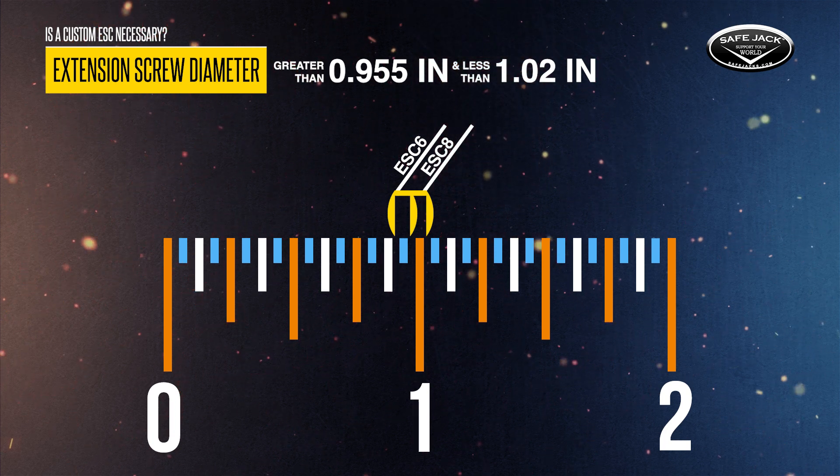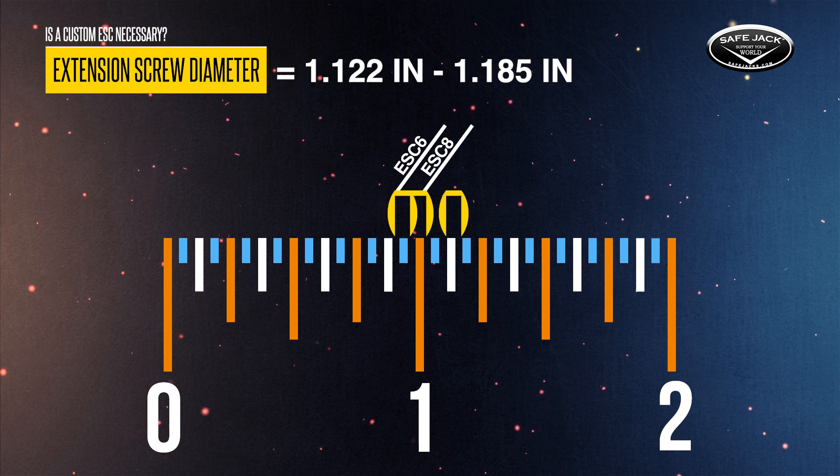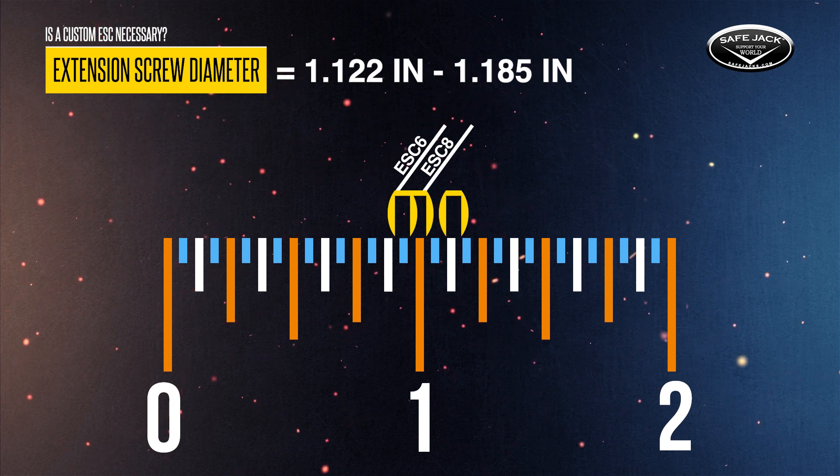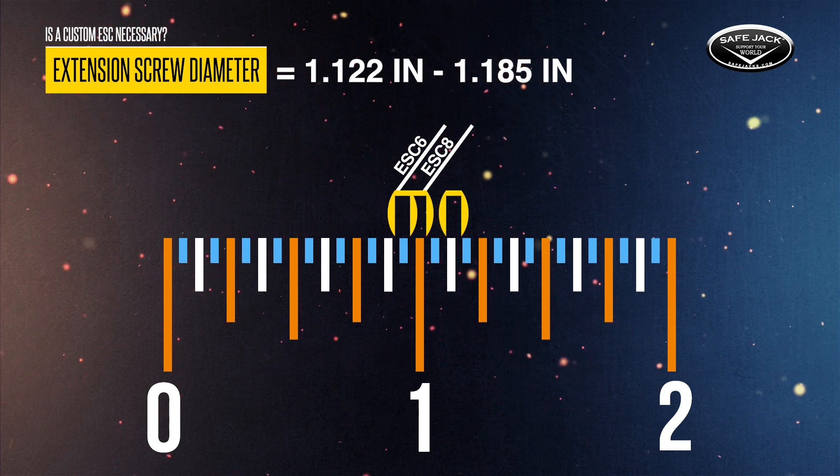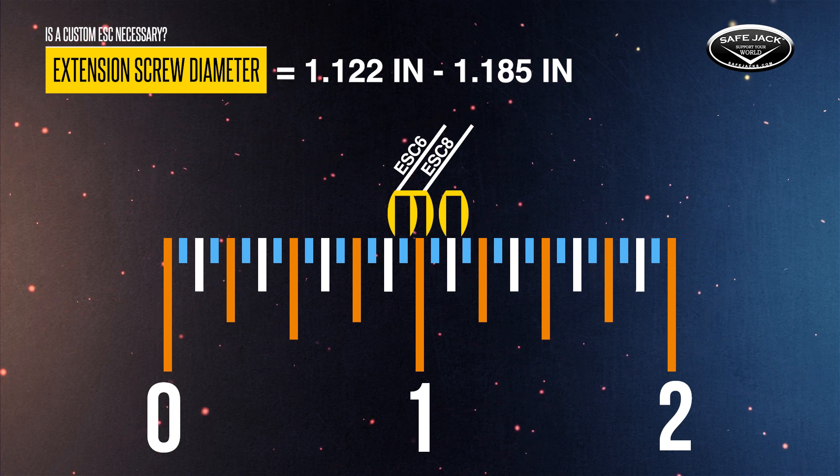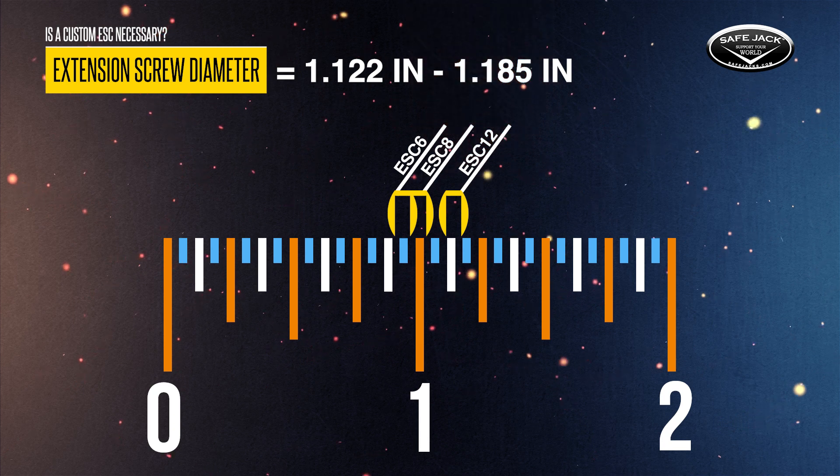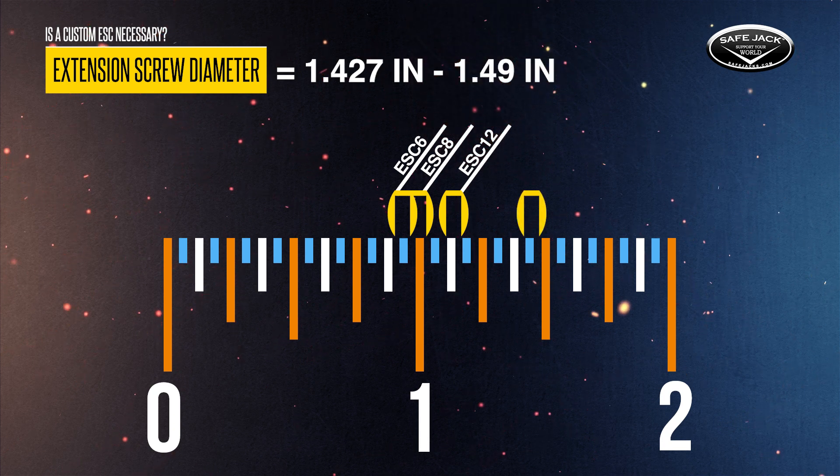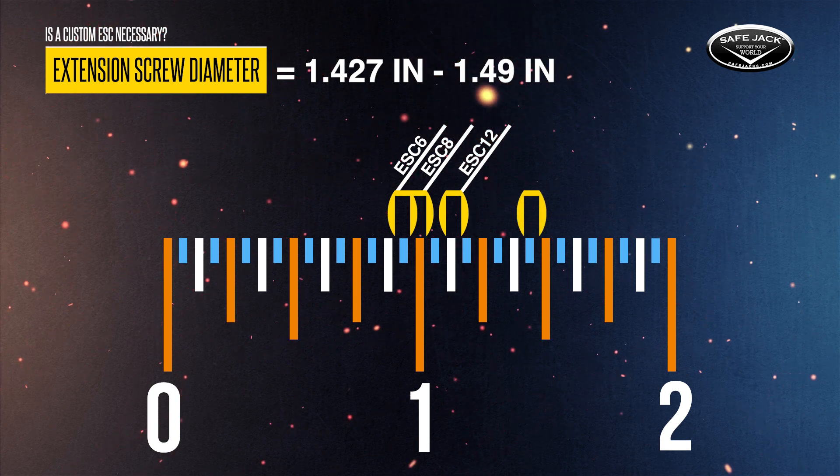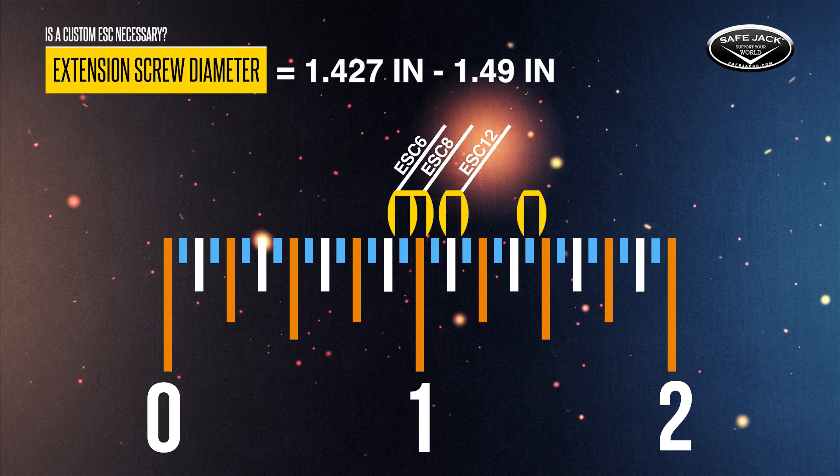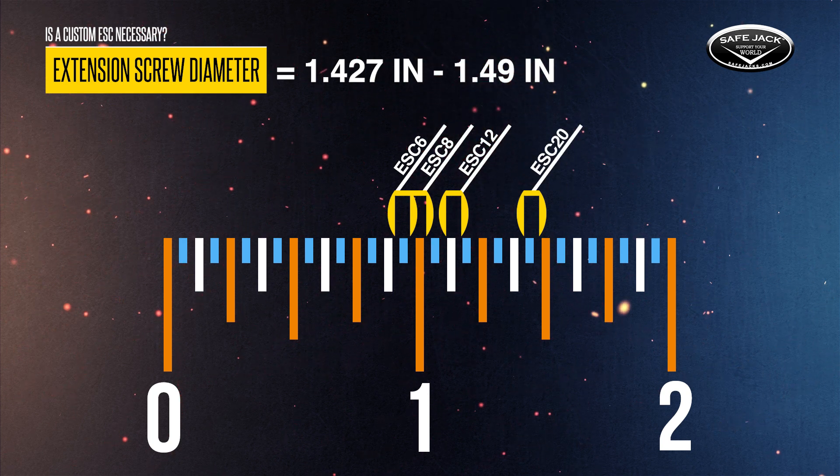If your extension screw measures between 1.122 inches and 1.185 inches, then you do not need a custom ESC and can just use our regular ESC 12. If your extension screw measures between 1.427 inches and 1.49 inches, then you do not need a custom ESC and can just use our regular ESC 20.